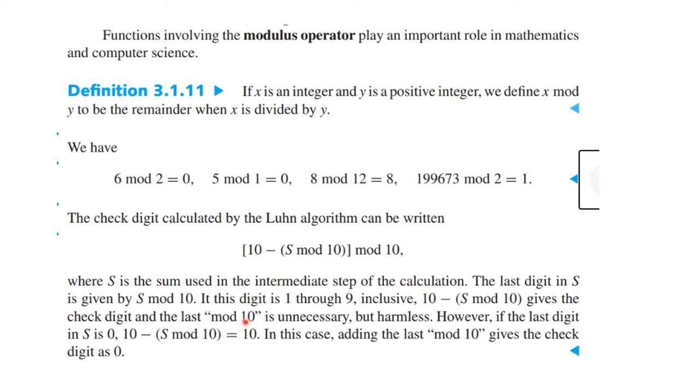An important function in computer science and math is called the modulus operator or sometimes abbreviated mod. Here's the definition. If x is an integer and y is a positive integer, x mod y is the remainder that you get when x is divided by y. So for example, when two is divided into six, the remainder is zero. When five is divided by one, the remainder is zero. When eight is divided by 12, it goes zero times and there's eight remainder. And when this big number is divided by two, since this is an odd number you know that you will have one.